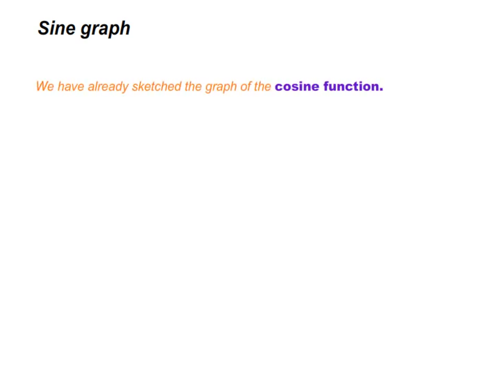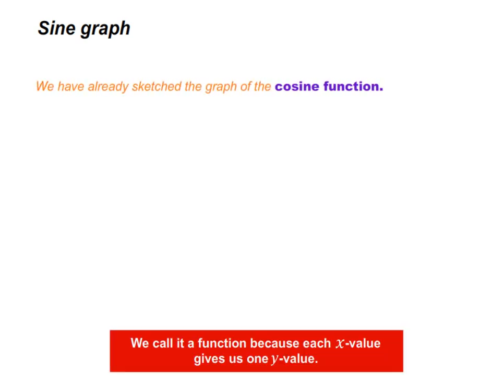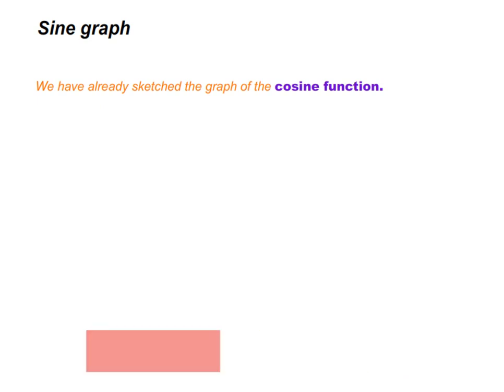We have already sketched the graph of the cosine function. We call it a function because each x value gives us one y value. In this section, we are going to sketch the graph of a sine graph.